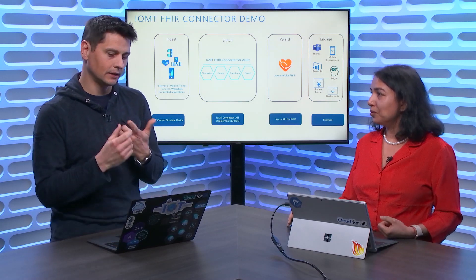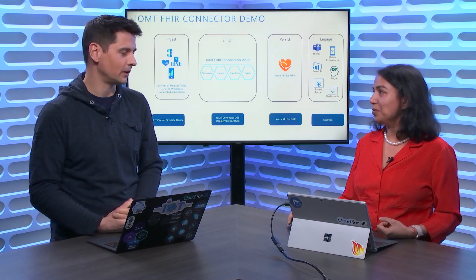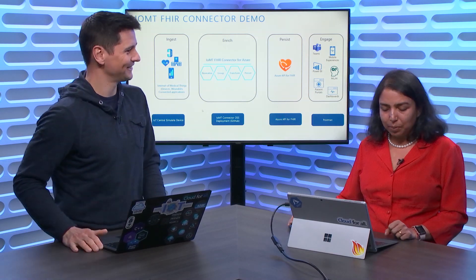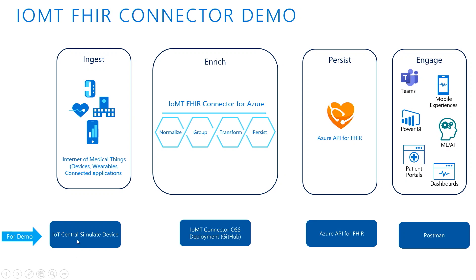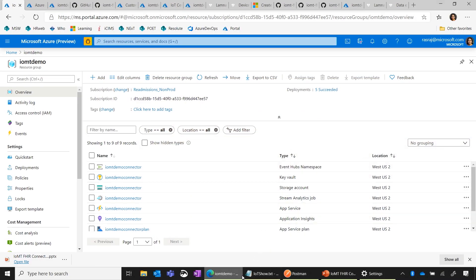With scalability, security, and privacy at the core of all of that. For the demo, we will use IoT Central for simulating the device. We will go to GitHub and deploy the IOMT connector. We will use Azure API for FHIR, and then we will use Postman to query the data and see the data in the FHIR store. So let's go to the Azure portal.